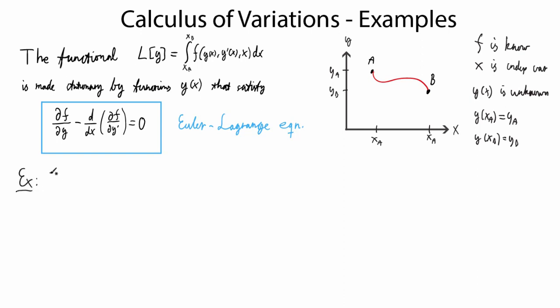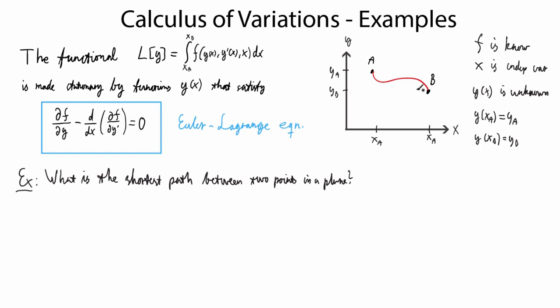The first problem we're going to solve is: what is the shortest path between two points in a plane? We have point A and point B and we want to find the shortest path between them. As mentioned in the last video, this is a pretty trivial problem, but now we'll be able to prove what we know to be true. The first step is to write down the proper functional — that amounts to formulating what the function f is. The functional we're after characterizes the length of a curve going between two points.